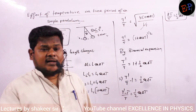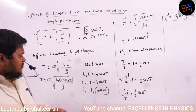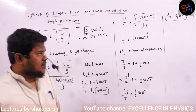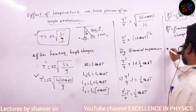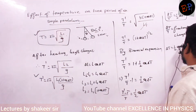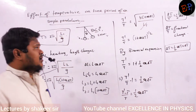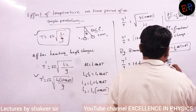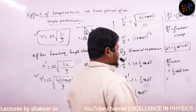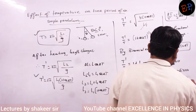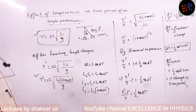Delta T by T is called fractional change. This is the fractional change in the time period of a simple pendulum if it is heated by some value. If you want only delta T, you can write: delta T equals half α T into ∆T. And delta T by T multiplied by 100 gives half α·∆T multiplied by 100, which is the percentage change in time period of a simple pendulum. This is a very important concept — questions have been asked many times on this topic.